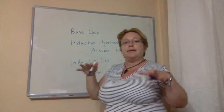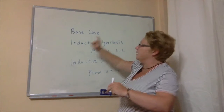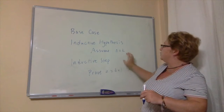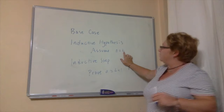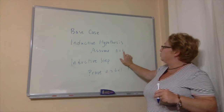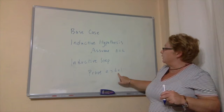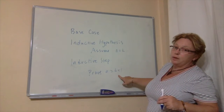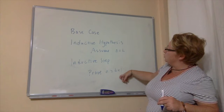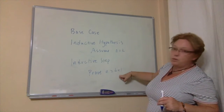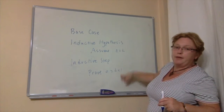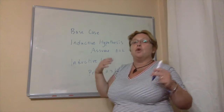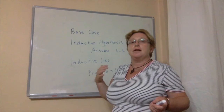With these three steps we have the domino effect. We've shown with the base case that the statement is true for 1. If we can assume n equals k and then prove n equals k plus 1, then since it's true for k equals 1, we know it's true for n equals 2, then 3, then 4, then 5, and so on. With these three steps we've shown it is true for all integers in our set.